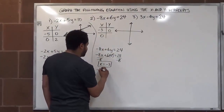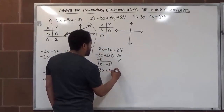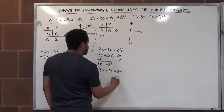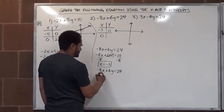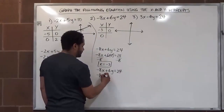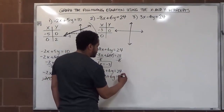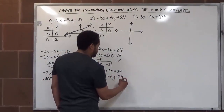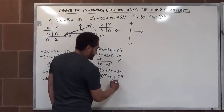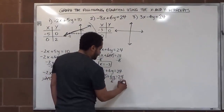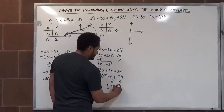Now for the y intercept: negative eight x plus six y equals twenty-four. The y intercept occurs when x is zero, so we have negative eight times zero plus six y equals twenty-four. The x term goes away to zero, and we divide both sides by six. Our y value is four.